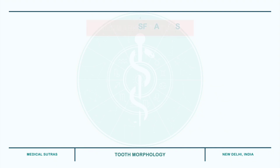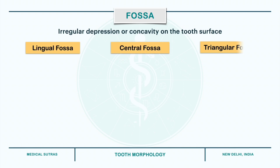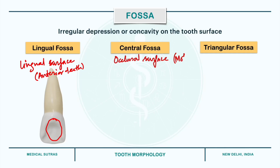Starting with fossa: a fossa is an irregular depression or concavity on the tooth surface. It includes lingual fossa, central fossa and triangular fossa. Lingual fossa is found on the lingual surface of anterior teeth. For example, in this maxillary central incisor, the large depression at the center of the lingual surface is the lingual fossa. Central fossa is found on the occlusal surface of molars and is formed by the convergence of ridges terminating at a central pit.